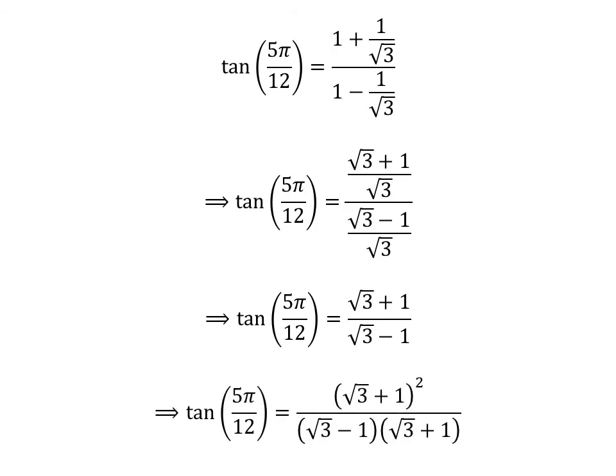Multiplying the numerator and the denominator of the fraction by a common factor does not change the value of the fraction. So let us multiply the numerator and the denominator of the right-hand side of the above equation by the common factor square root of 3 plus 1.